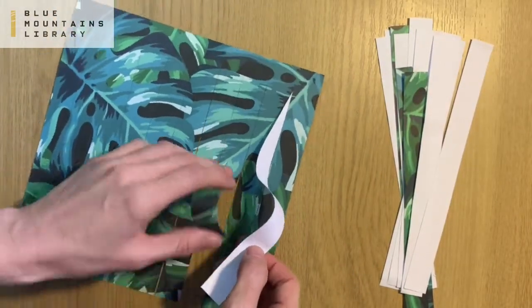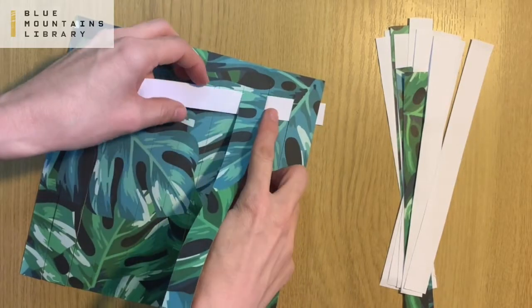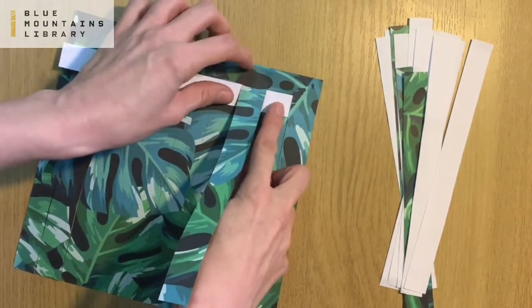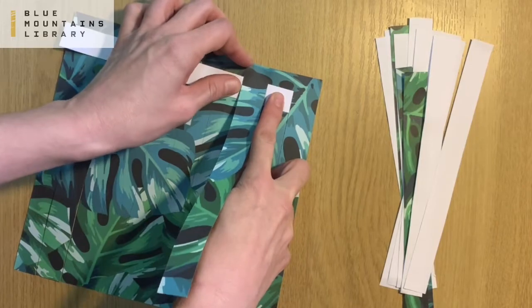Pick up your first strip of paper and weave it under the first leg of your paper loom, over the second and under the third again.